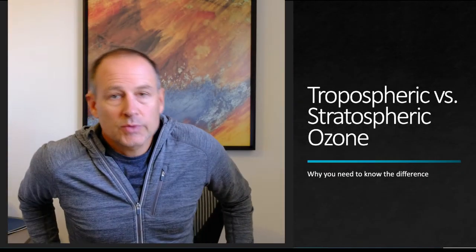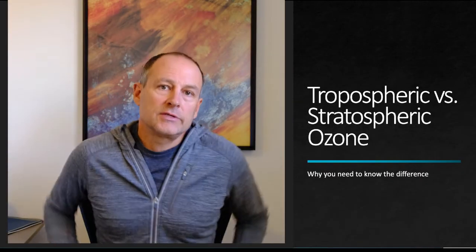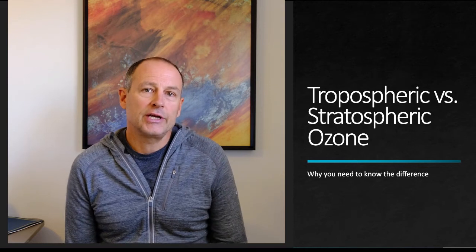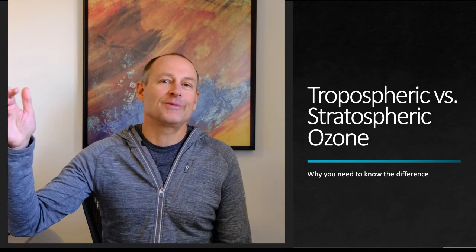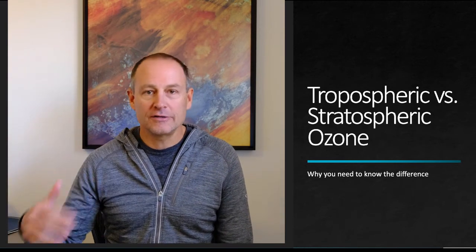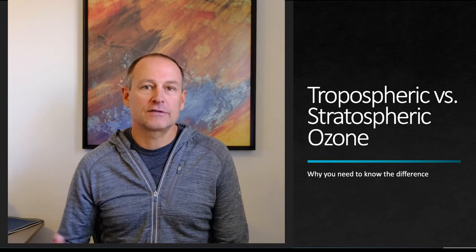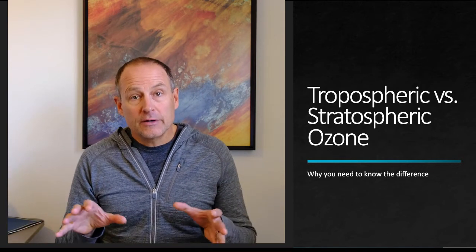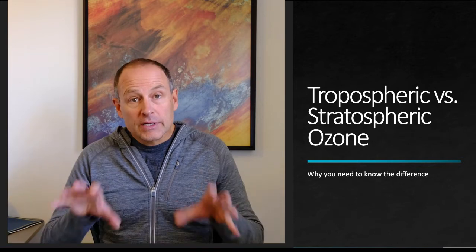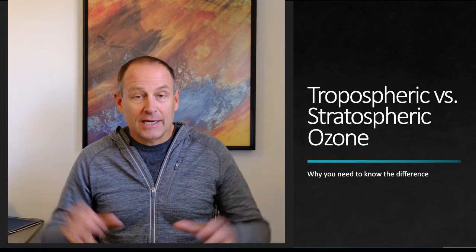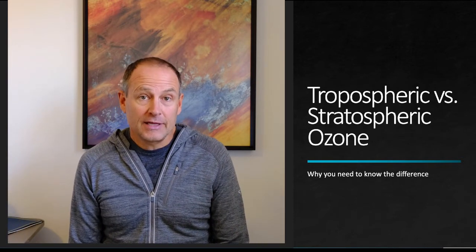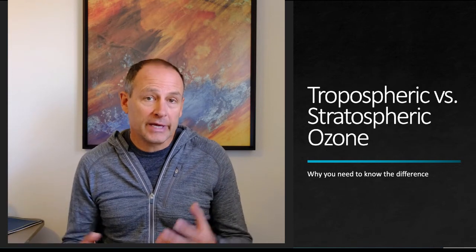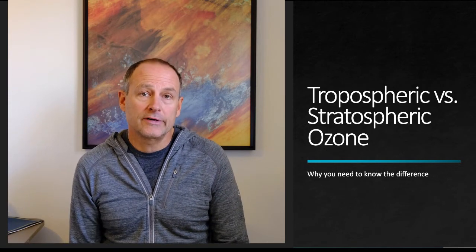I'm making this video because one of the things I've noticed over the years is that people really struggle to differentiate between ozone found up in the atmosphere in the stratosphere and ozone found at the surface of the atmosphere, or in the troposphere. In this video, I want to clearly delineate why these types of ozone are different and why we have really different problems with ozone depending on where it's located in the atmosphere.